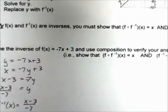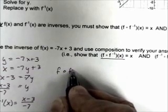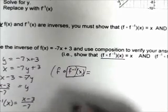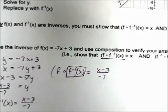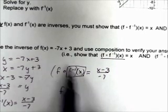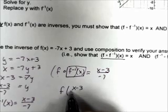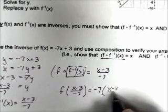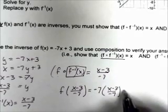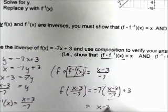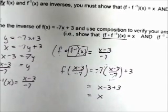First find f inverse of x. Replace f of x with y, interchange x and y, subtract 3, divide by −7: y = (x − 3)/(−7). So f inverse of x = (x − 3)/(−7). Now verify f of f inverse of x: substitute (x−3)/(−7) in for x in f(x) = −7x + 3. We get −7 × (x−3)/(−7) + 3 = (x − 3) + 3 = x. ✓